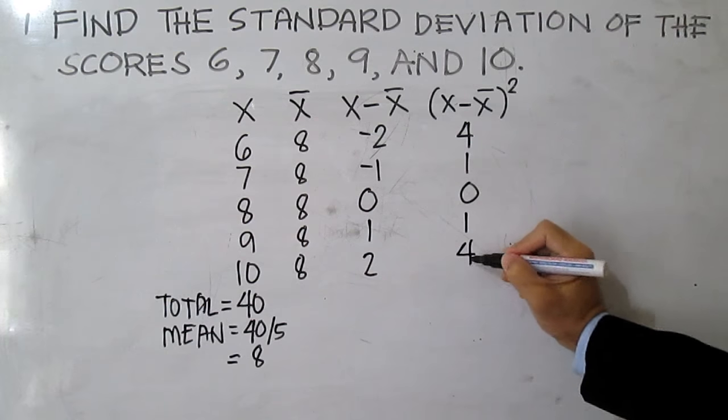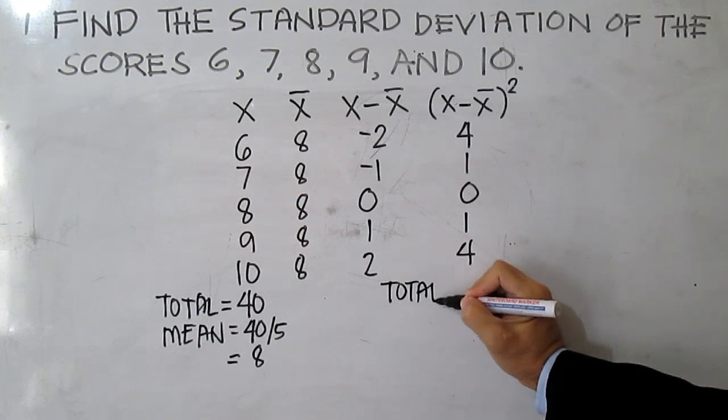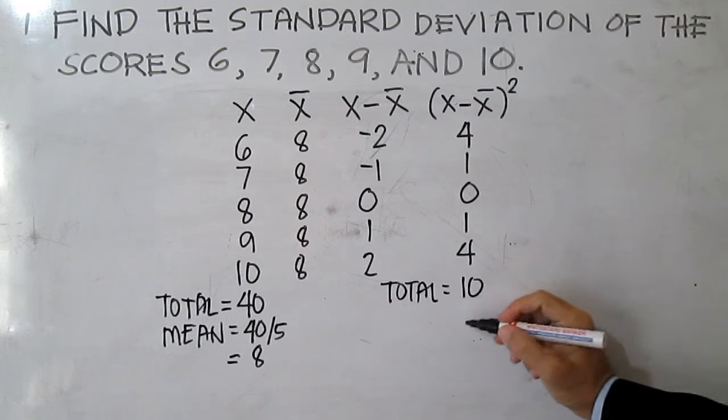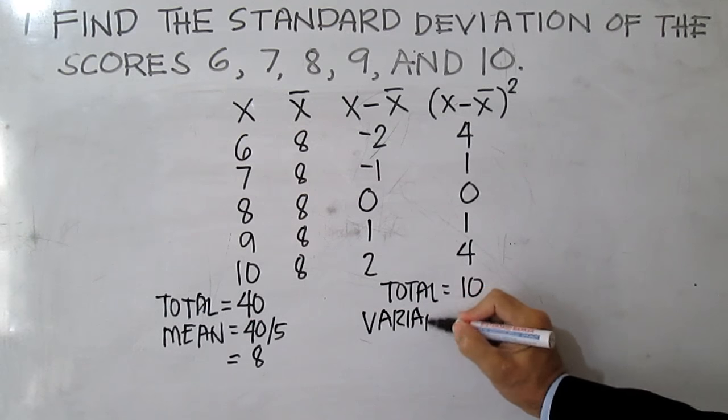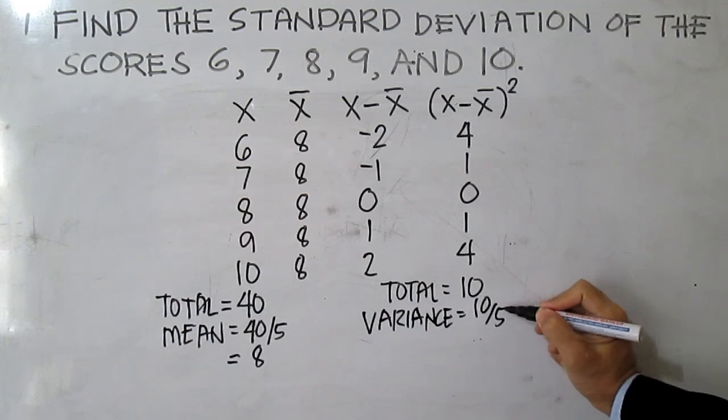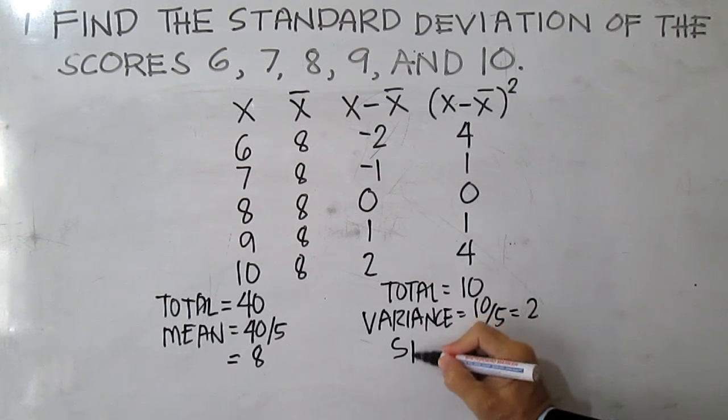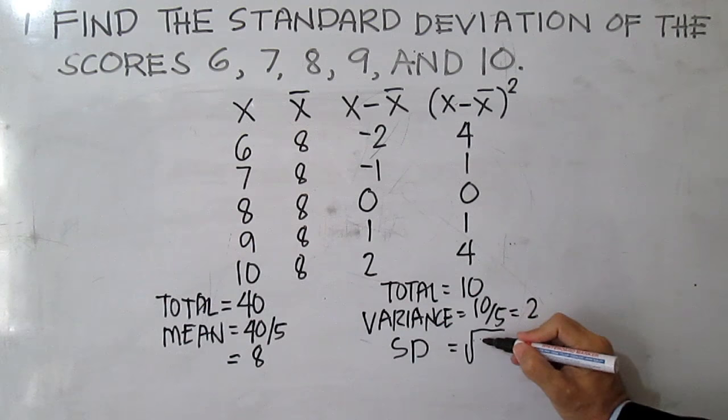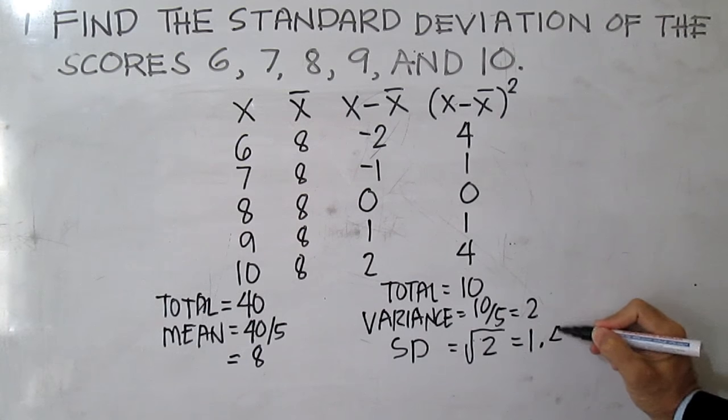Again, you find the sum: this is 4 plus 1, 5, 6, 10. Then find the average: 10 divided by 1, 2, 3, 4, 5 equals 2. This is your variance, and the square root of your variance is the standard deviation, which is the square root of 2.